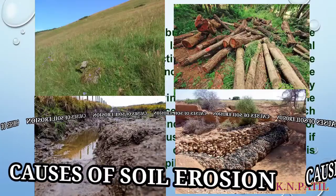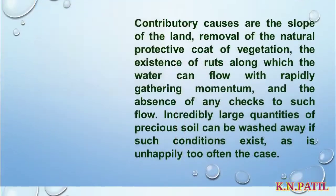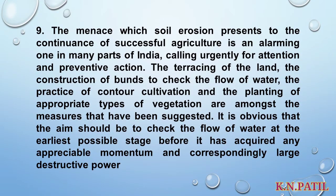The menace which soil erosion presents to the continuance of successful agriculture is an alarming one in many parts of India, calling urgently for attention and preventive action. The terracing of the land, the construction of bunds to check the flow of water, the practice of contour cultivation, and the planting of appropriate types of vegetation are among the measures that have been suggested. It is obvious that the aim should be to check the flow of water at the earliest possible stage, before it has acquired any appreciable momentum and correspondingly large destructive power.